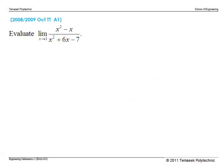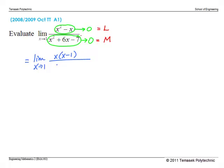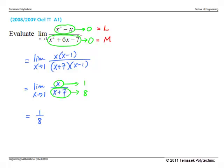This is problem one, a past year term test problem. If we take the limits of the numerator and denominator separately, we get m equals zero, so we cannot use the division rule. Since both numerator and denominator are polynomials, we simplify by factorization. The numerator becomes x times (x minus 1), and the denominator becomes (x plus 7) times (x minus 1). Cancelling the common factor (x minus 1), we get x over (x plus 7). Now the numerator limit is 1 and the denominator limit is 1 plus 7, which is 8. Since 8 is non-zero and both limits are finite, we apply the division rule: the answer is 1 over 8.